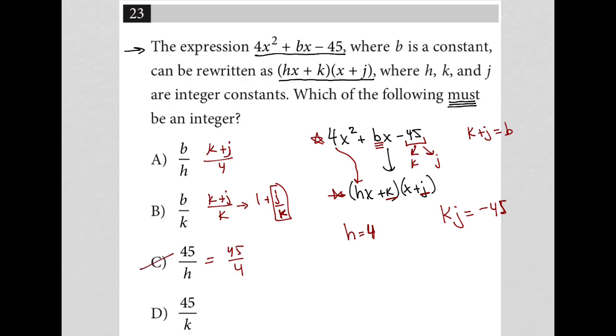For D, that's 45 over k. And what do I know about k? I know that k has to be a factor of 45, which would mean that 45 divided by k has to be an integer. So choice D has to be correct.